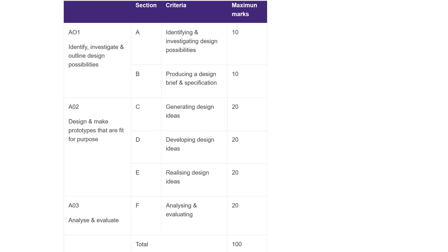I'm going to create this video to talk you through the first section of your NEA controlled assessment task, which is 50% of your GCSE. I'm focusing today on the AQA specification and the assessment criteria from 2019. We're going to look at assessment objective 1, section A, and identifying and investigating design possibilities, which are worth 10 marks.